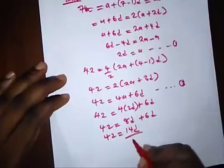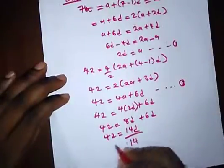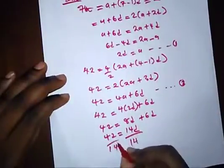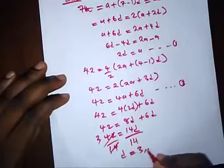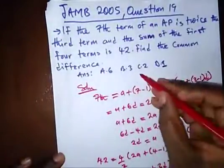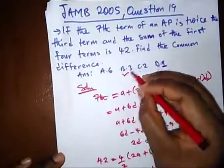So from here, 42 is equal to 14D. Dividing both sides by 14, this will go 3 times. So we have D is equal to 3. So our common difference is 3, and that's option B.